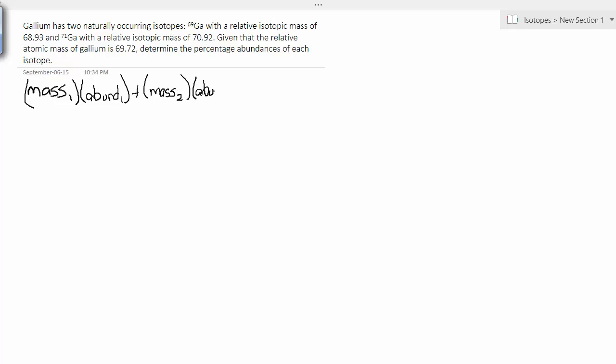So we've got to go back and we're going to look at our formula that we developed. Mass times abundance plus mass times abundance is equal to the relative atomic mass, the periodic table mass.